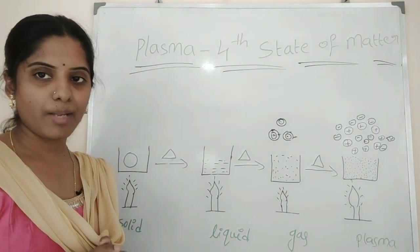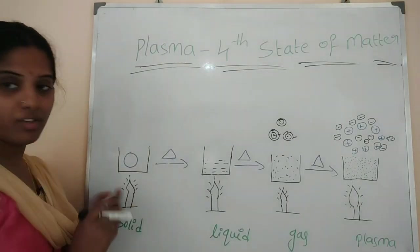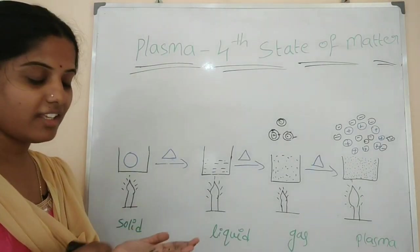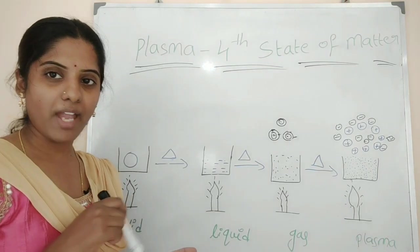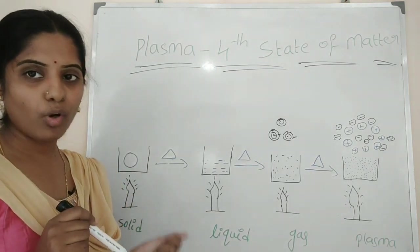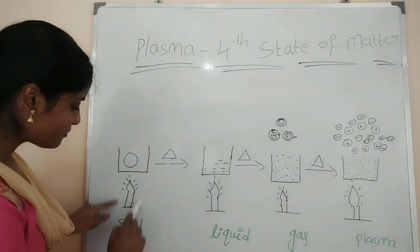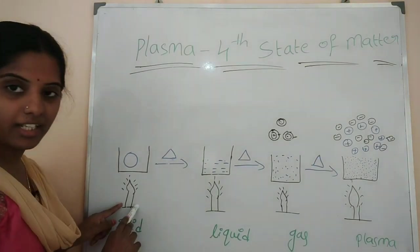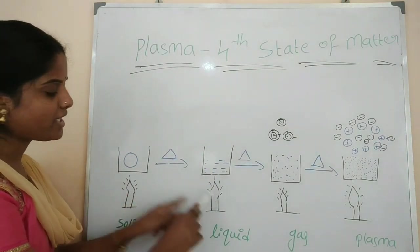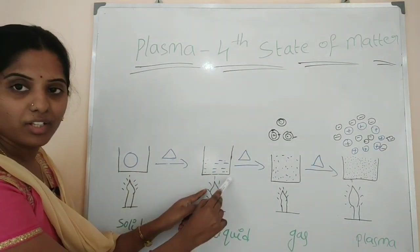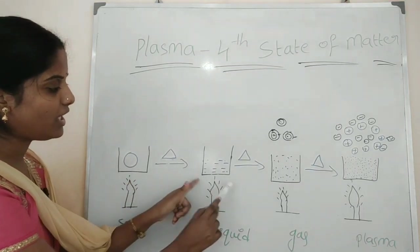Let's talk about ice as an example of the solid state. Because of tightly packed particles, it is a solid. By increasing the temperature, ice is converted into liquid — solid is converted into liquid. Further increasing the temperature, liquid is converted into gas.